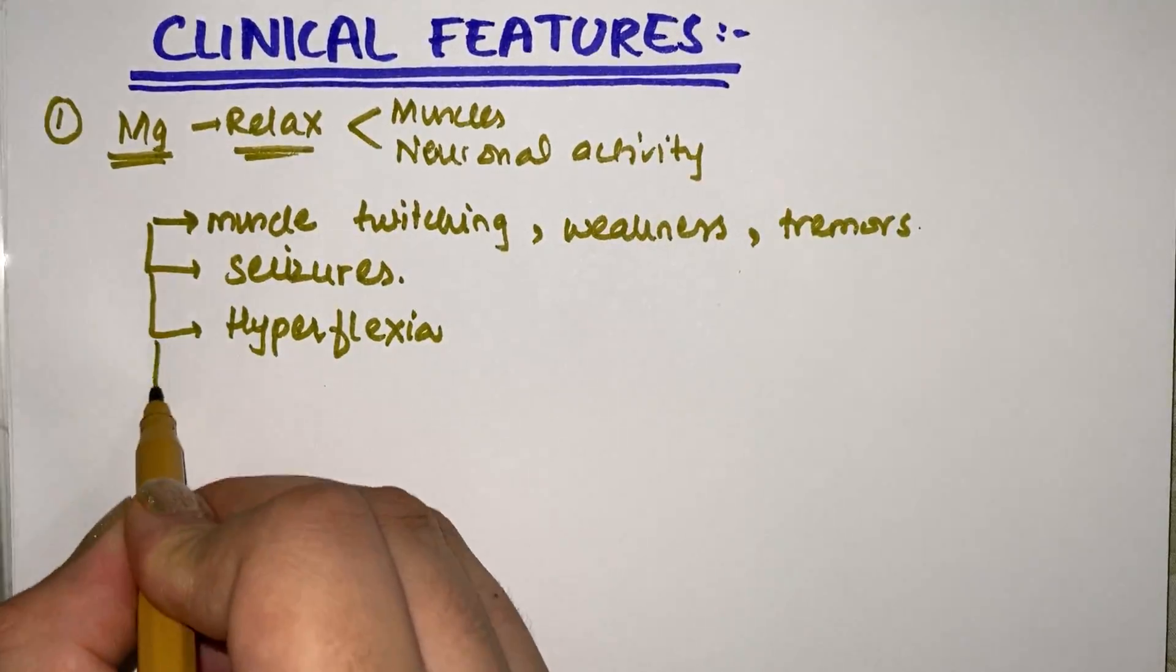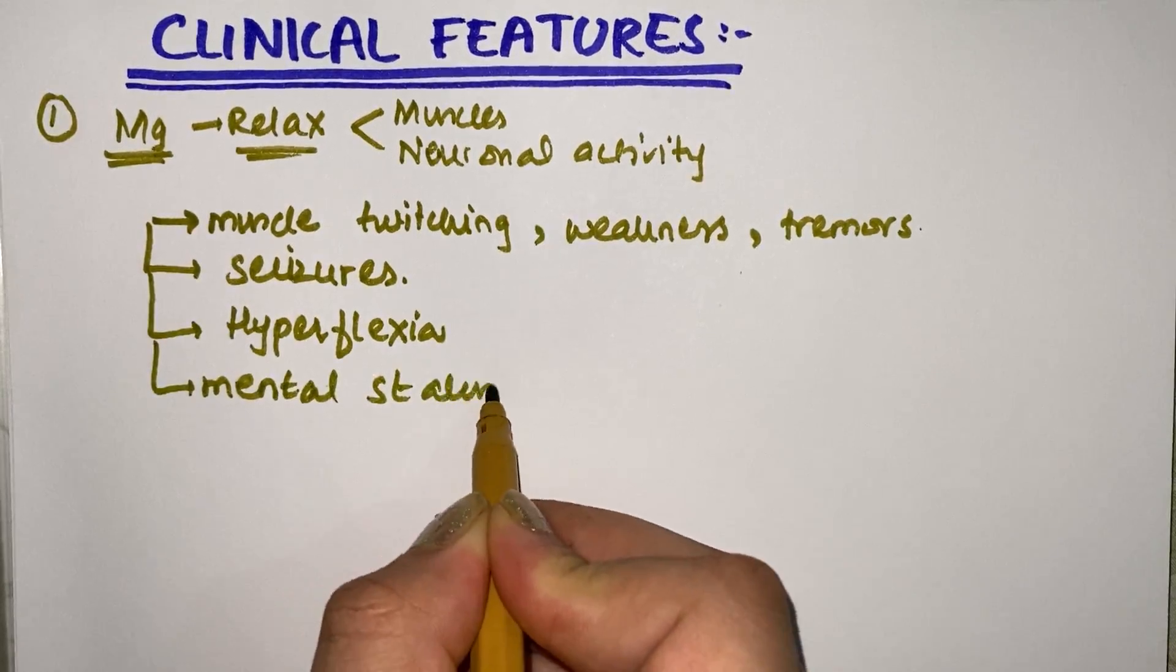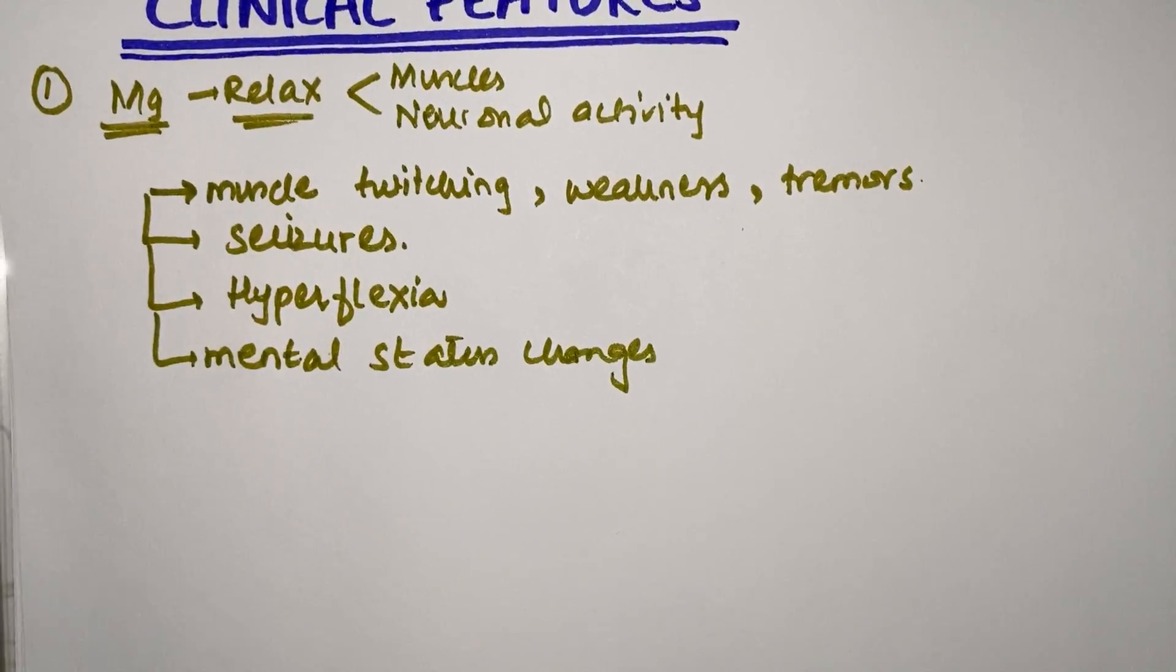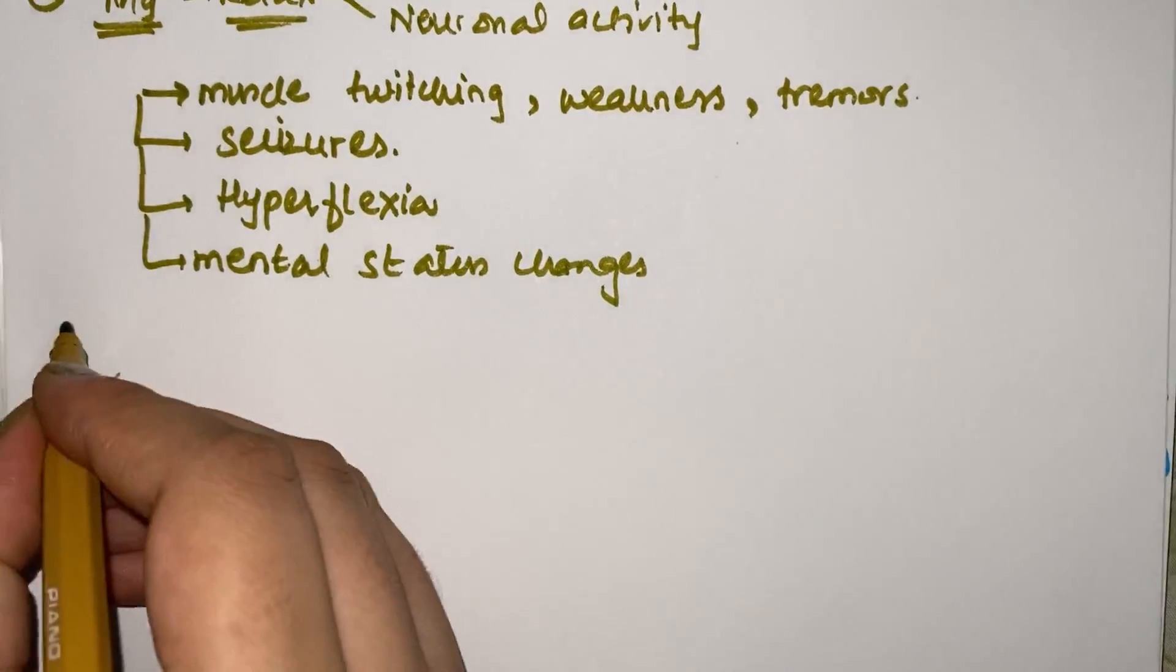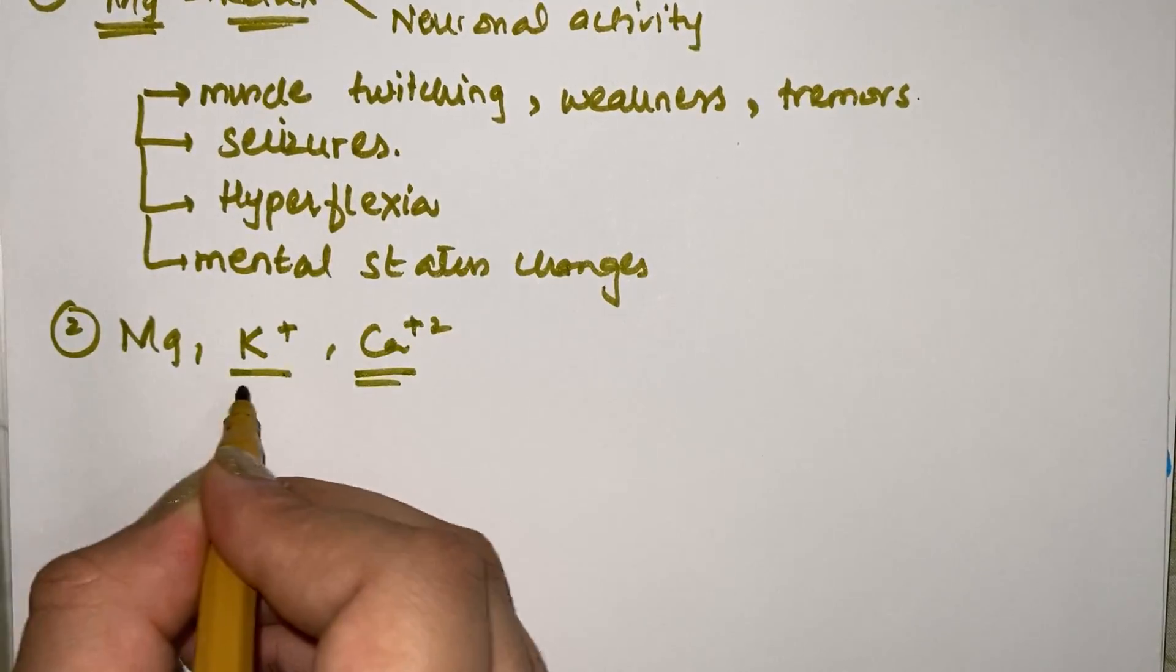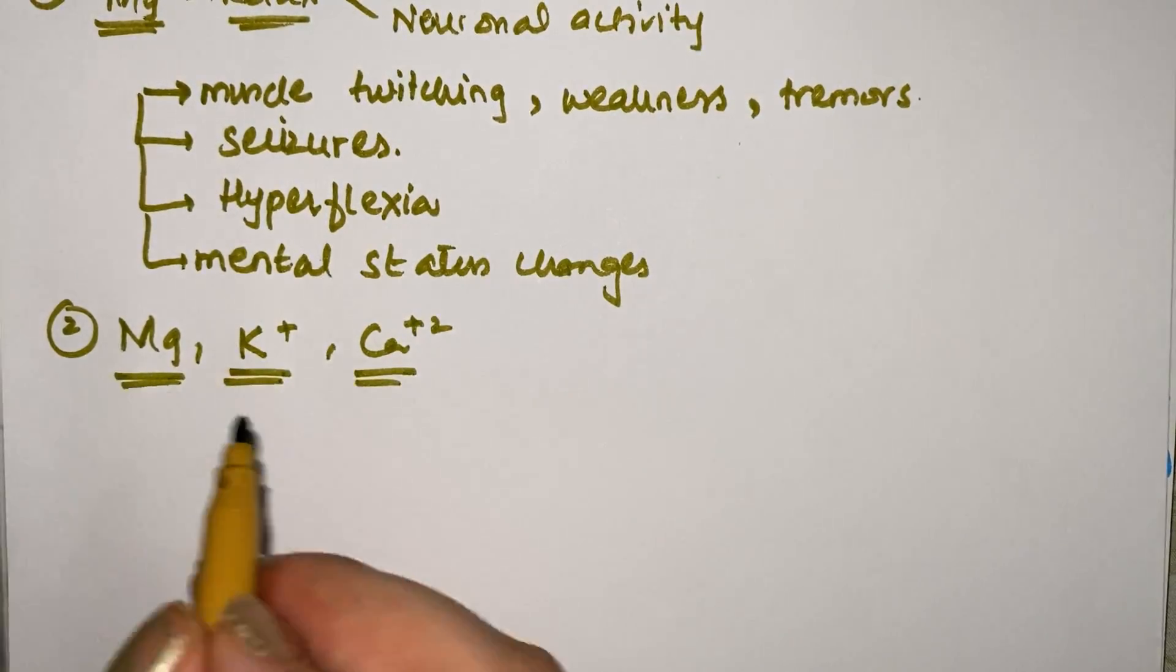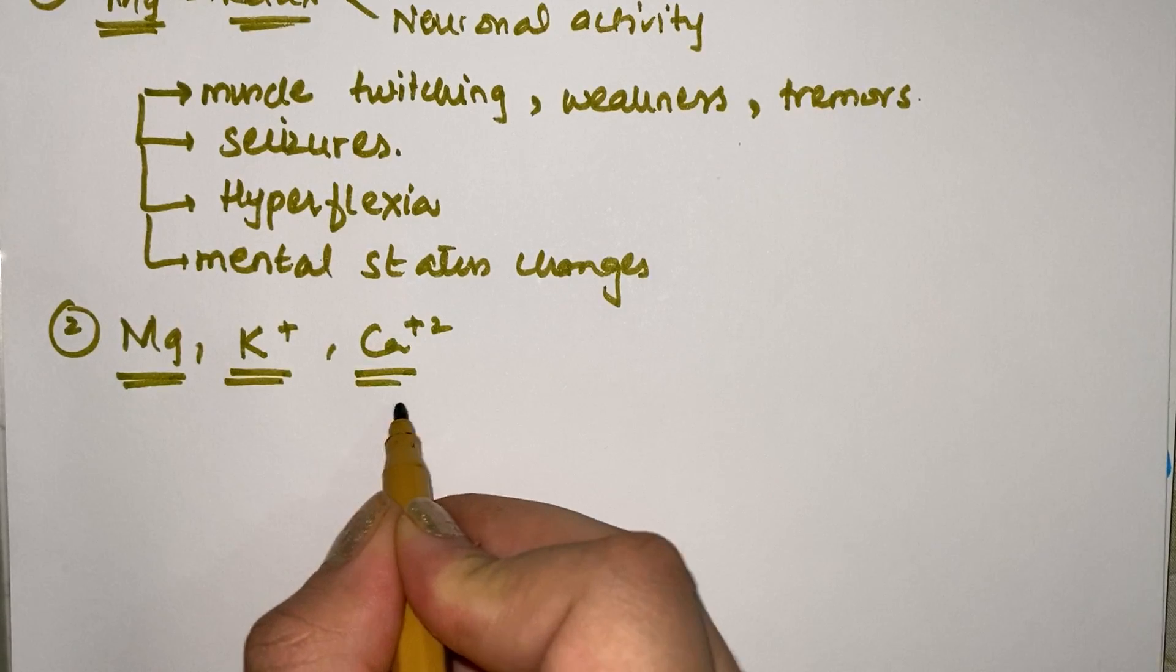Now moving on, as we have already discussed, magnesium, potassium, and calcium, they are associated with each other in their levels and in their metabolism. I'll explain you here. If a patient is having hypomagnesemia, he will develop hypocalcemia too.